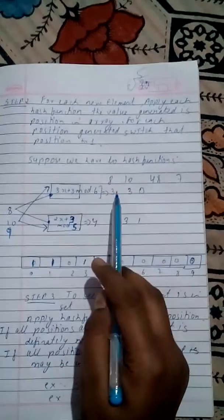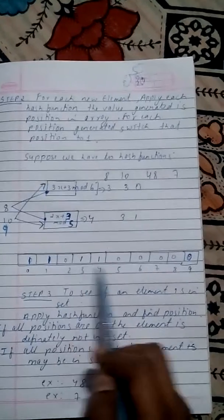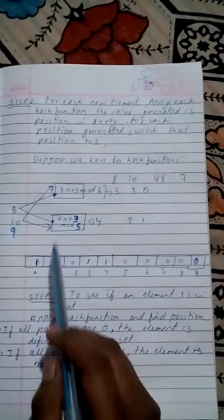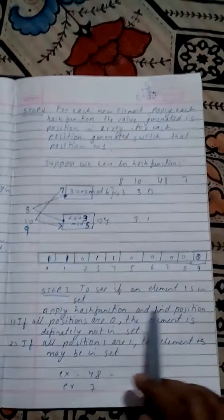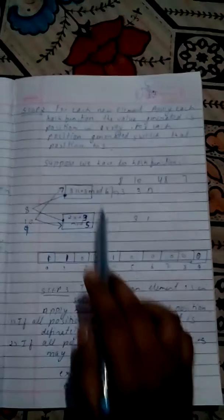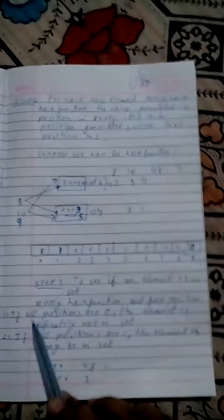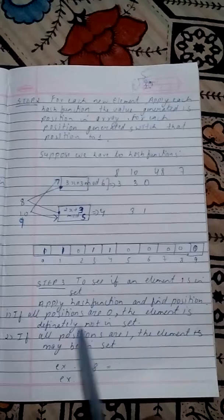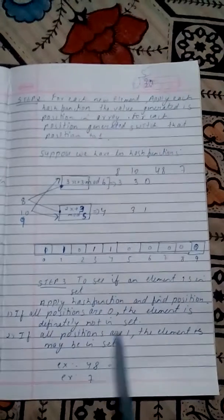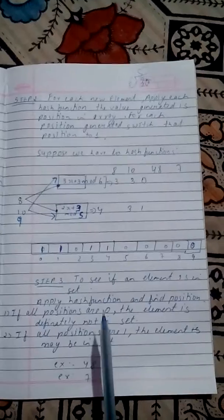I have taken three examples here. Now our next is to check whether the element is in the set. From this we have found the positions and put the bits. Suppose if in this array our bits are 0, then it is sure that the element is definitely not in the set. And if it is 1, the element is present in the set.